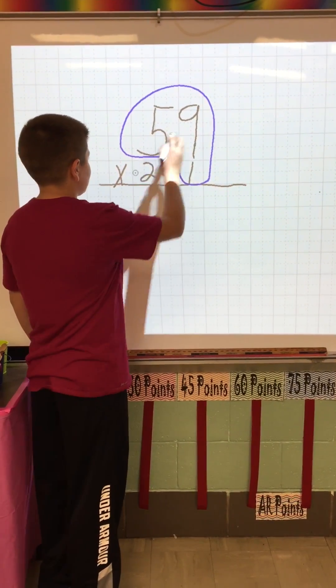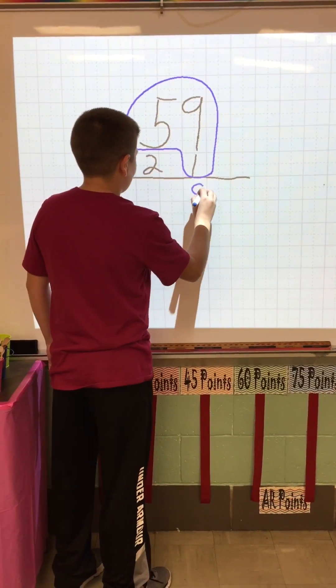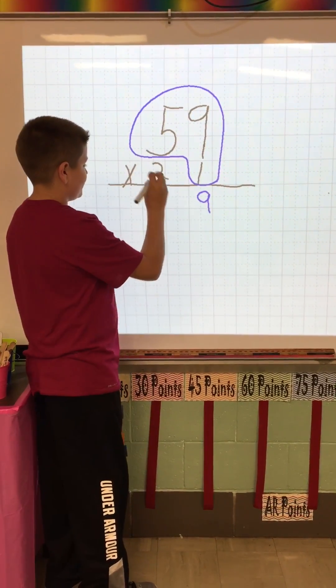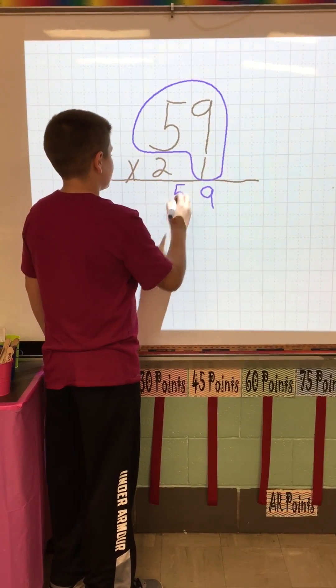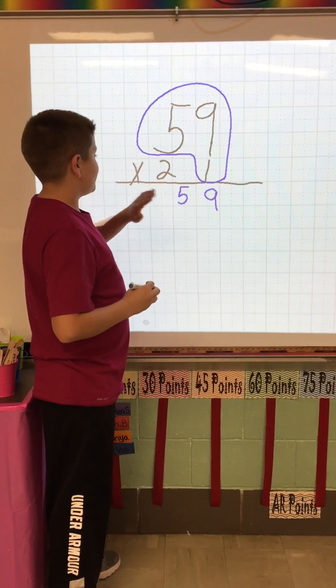So you do 1 times 9, that's 9. You do 1 times 5, and that's 5. So you're done with that.